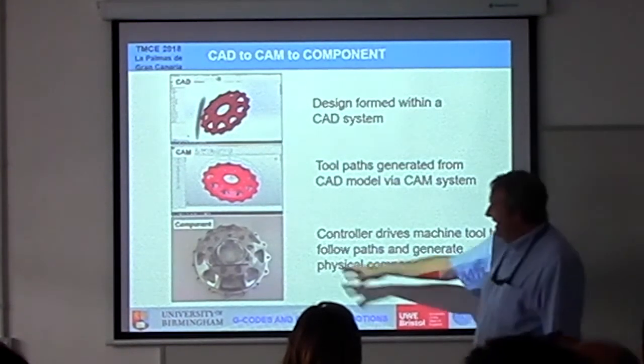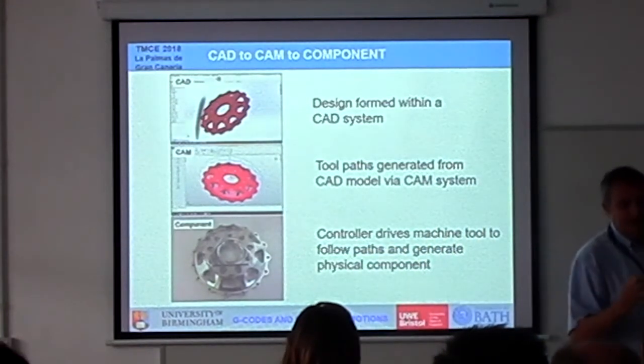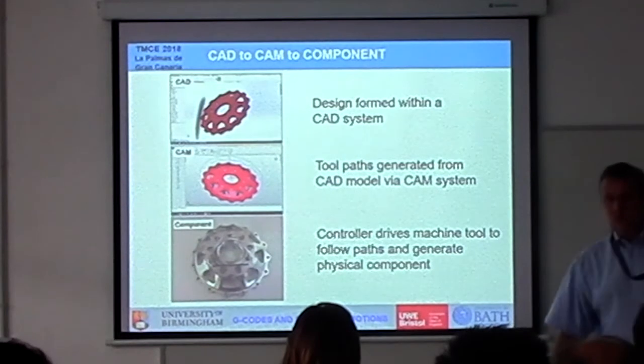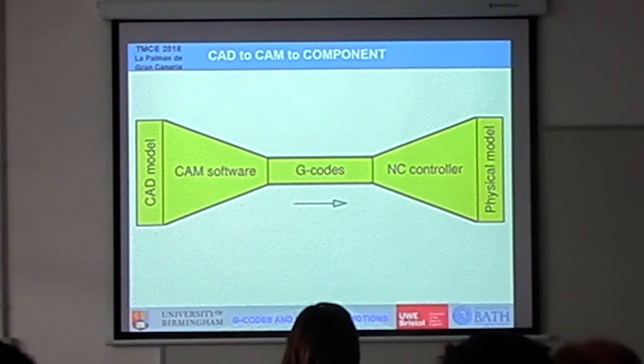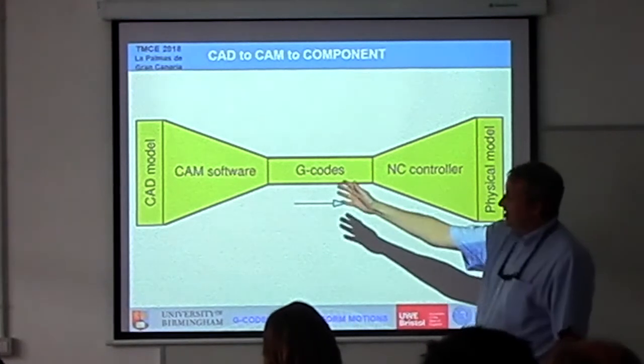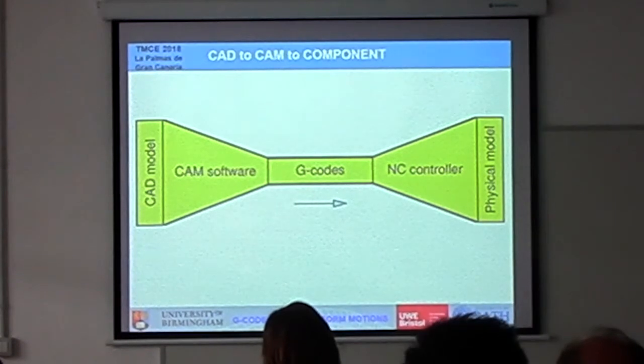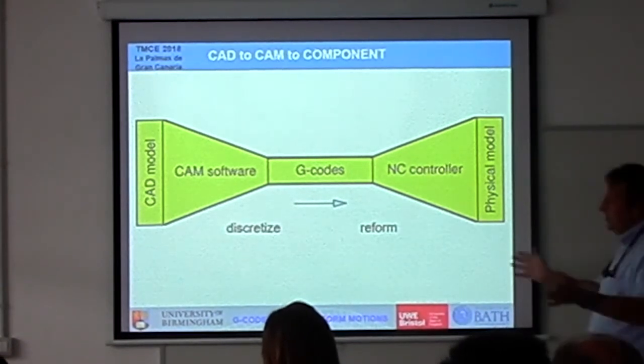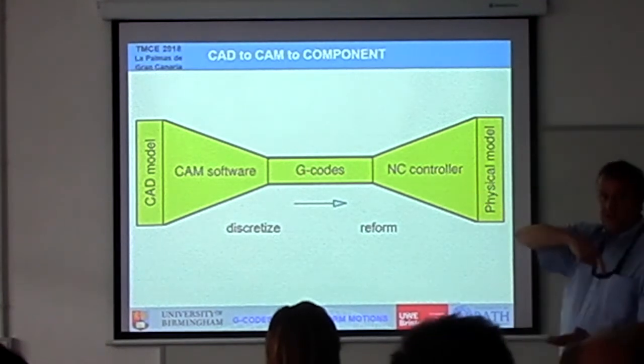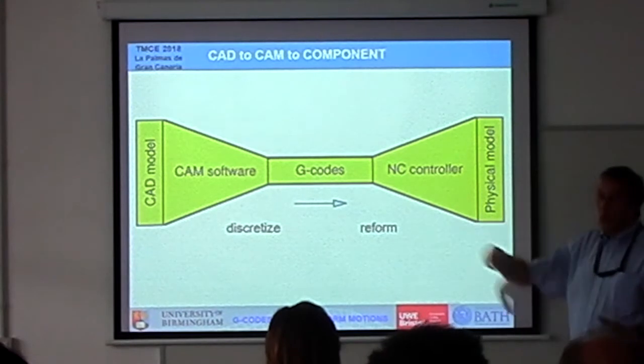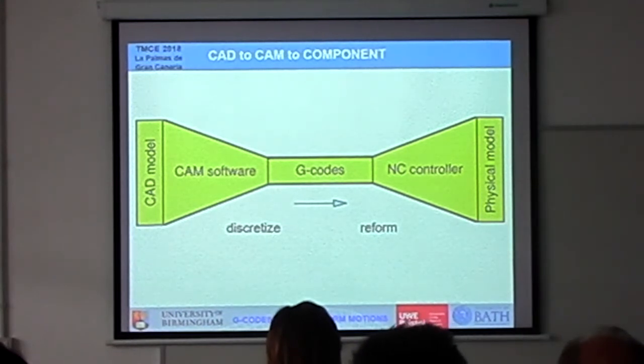In the end, what we end up with is a component that we hope matches the initial CAD drawing. So it is, in essence, a linear process. You have a CAD model. That CAD model goes into a piece of CAM software. The CAM software goes through discretization, breaks it down, generates these toolpaths. Those toolpaths then get sent to the controller that's moving the cutting tool around, where it reforms it to produce what it wants, to produce, you hope, the profile it's going to follow. And at the end of the process, we've got our physical model.